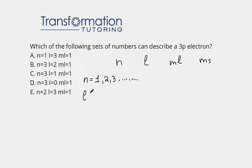L depends on N, so it can go from 0 to N minus 1. For example, if my N is equal to 3, my L could be either 0, or it could be 1, or it could be 2.